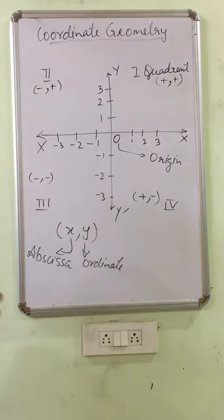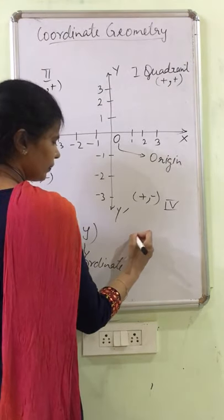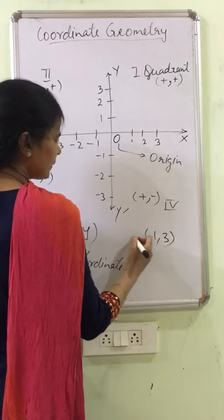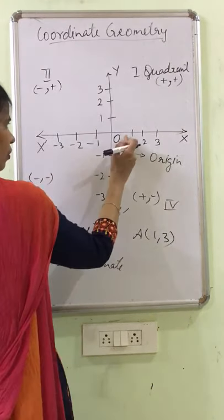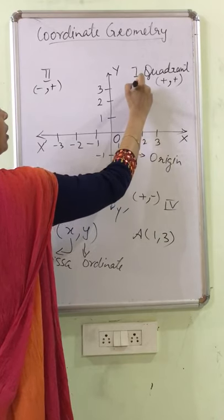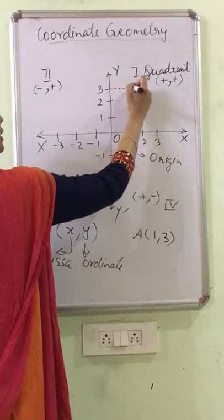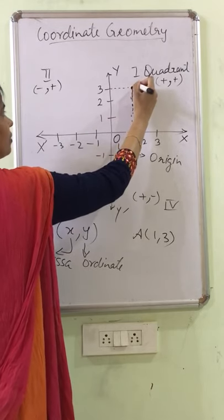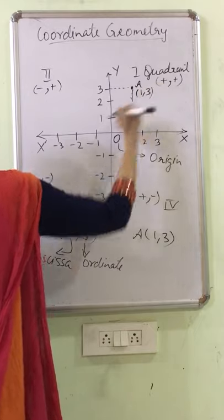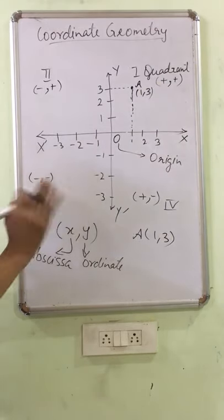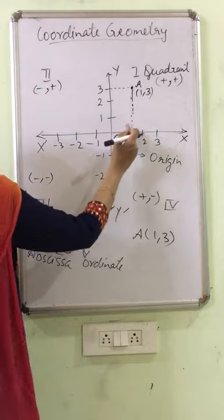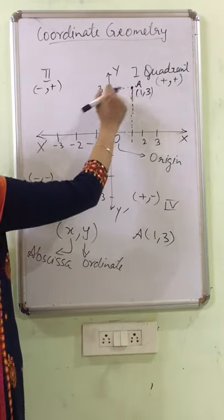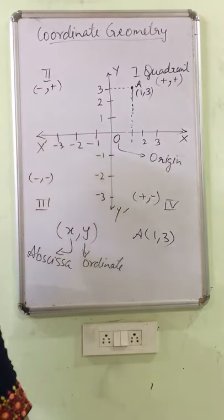Suppose I have to plot point A, 1, 3. It means x-coordinate is 1 and y-coordinate is 3. From x, I will take perpendicular. From y-axis, again perpendicular line. And wherever these lines are meeting, that point is known as A, 1, 3. So if you are plotting it on graph, it is easy to plot it on graph. If you are not plotting it on graph, then with the help of scale, you have to take perpendicular lines from 1 and 3. Wherever it is meeting, that point becomes 1, 3.